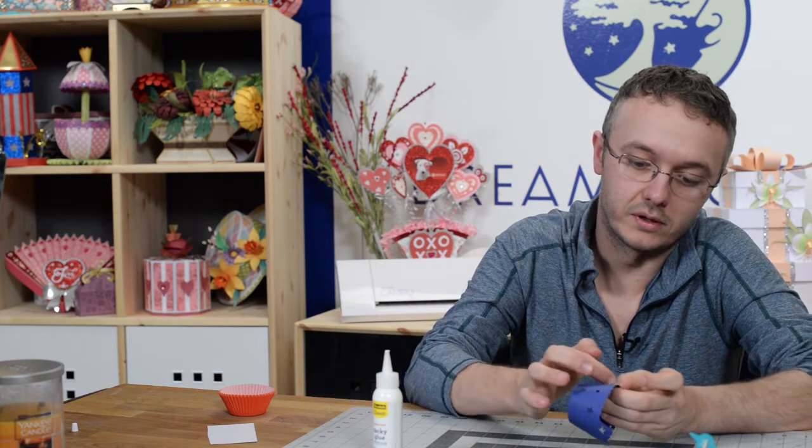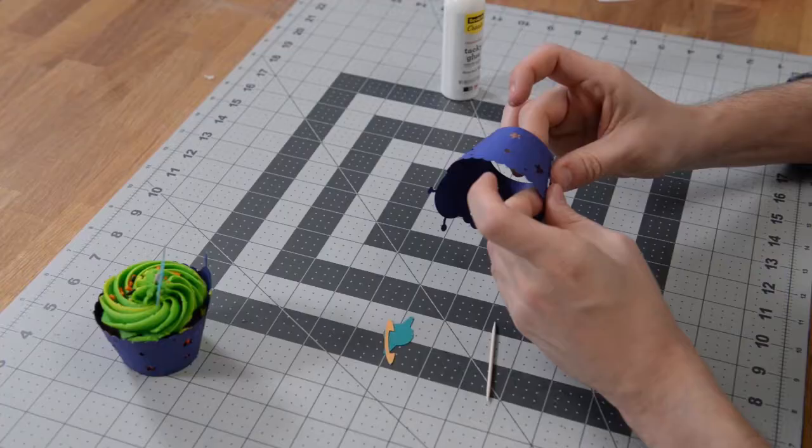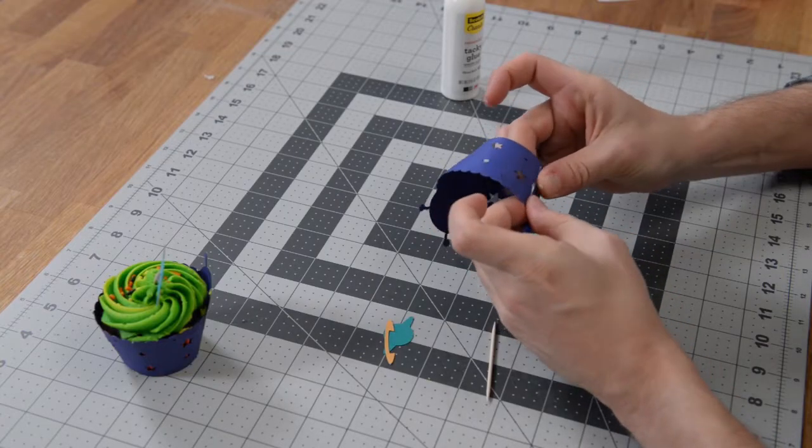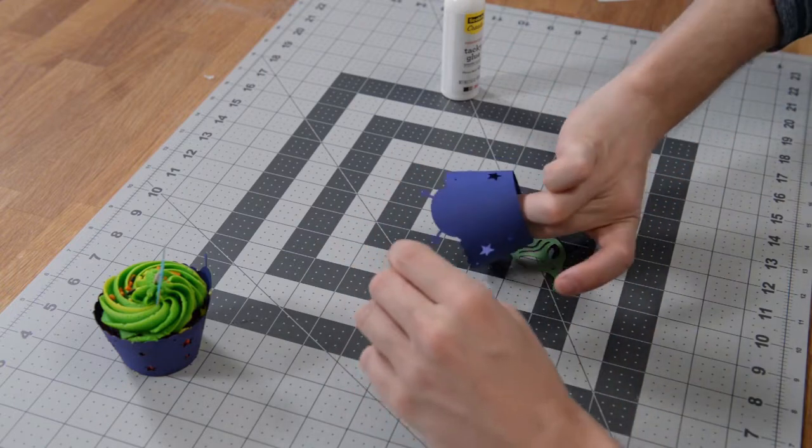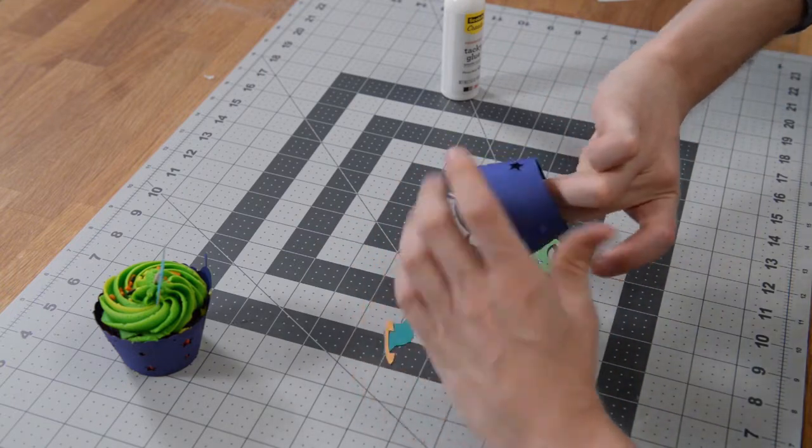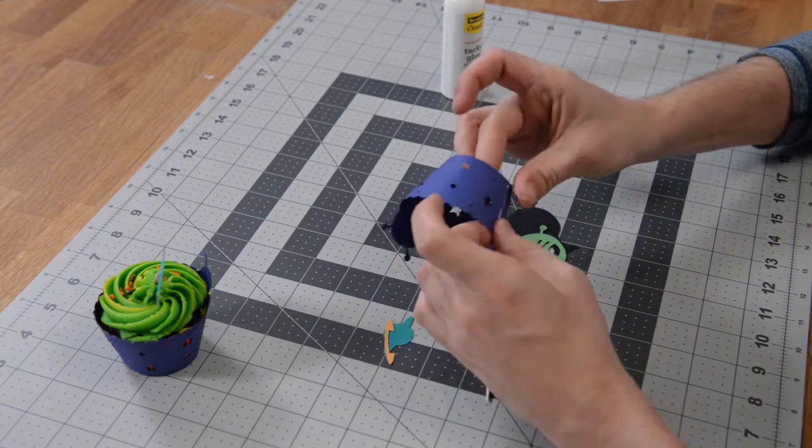That's okay if you get a little bit of glue there - these are going to be on the back so no one's really going to see those. Just hold that in place until it dries. It will dry clear, so it's not a big deal. Maybe don't use as much glue as I just did.